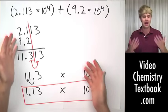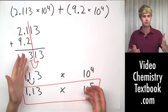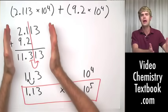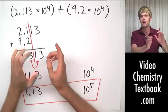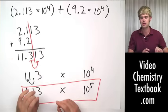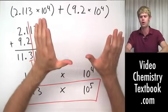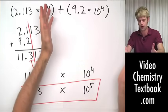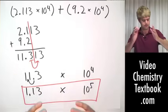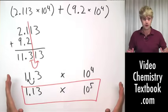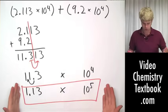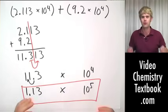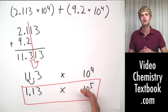So we do the math — addition, subtraction, multiplication, division — just like we would any other problem, paying attention to significant figures and not worrying at all about the 10 to the whatever power. Round it, and then make sure your final answer is in correct scientific notation. That is scientific notation and significant figures.